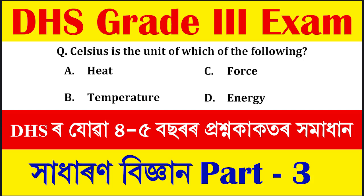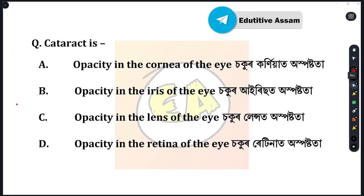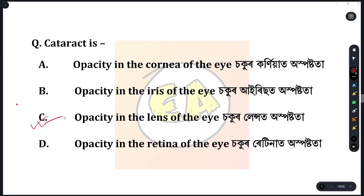The first question is: what is a cataract? Option A: opacity in the cornea of the eye. Option B: opacity in the iris of the eye. Option C: opacity in the lens of the eye. Option D: opacity in the retina of the eye. The correct answer is Option C — opacity in the lens of the eye.